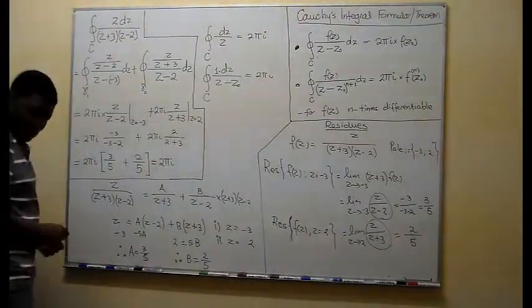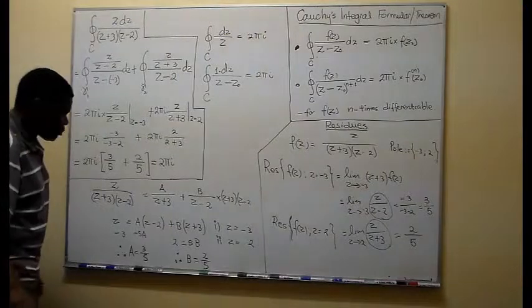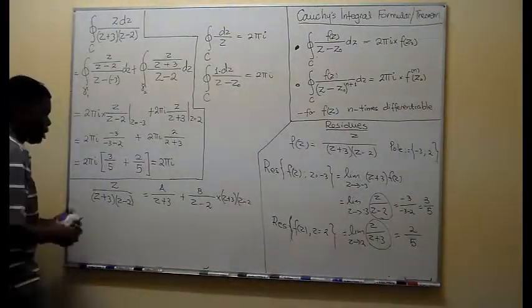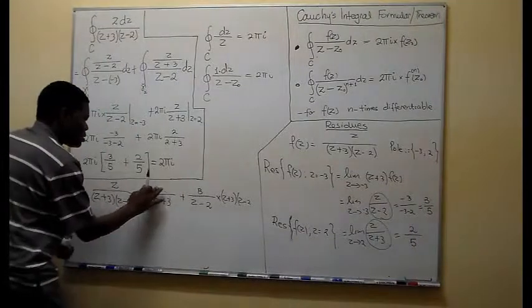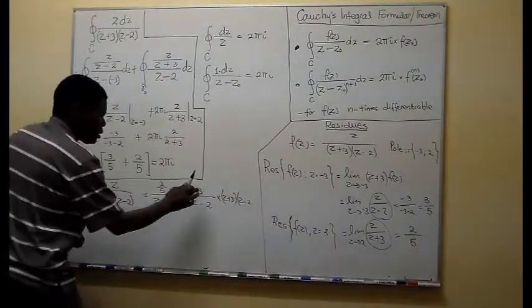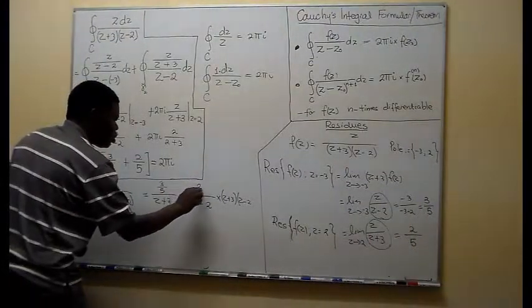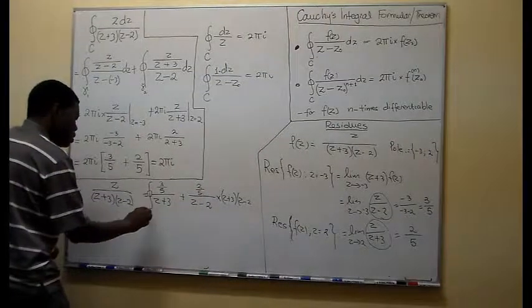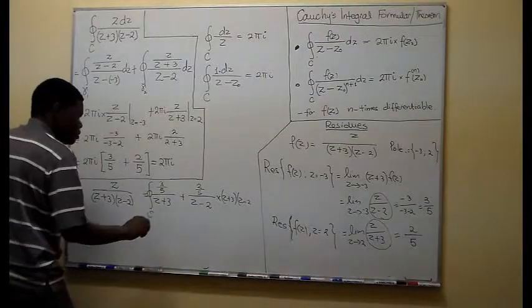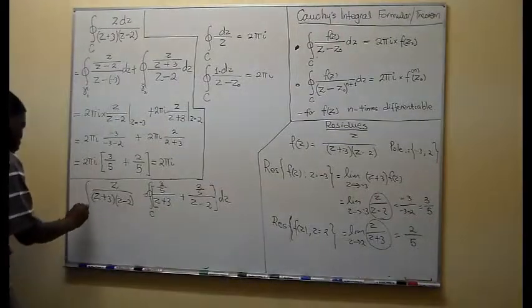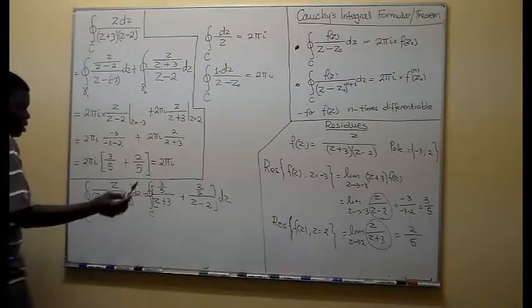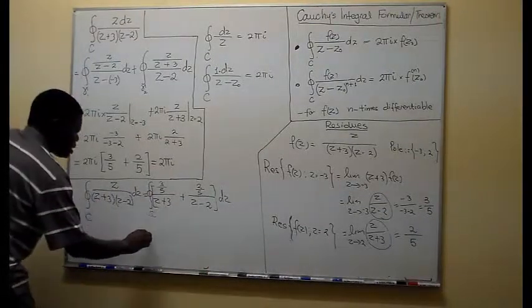So now is to integrate this. If I integrate this now, in other words, we have here 3 over 5 and the other one is 2 over 5. Now putting the integral there, the integral over C equals integral over C dz. You see that exactly when we take this.